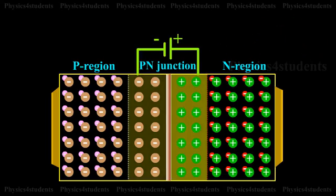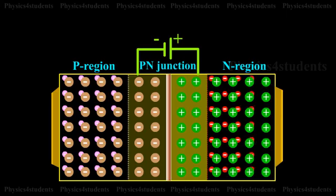An electric field is set up between the donor and acceptor ions in the depletion region. The potential at the N side is higher than the potential at the P side. Therefore, electrons in the N side are prevented from going to the lower potential of the P side.